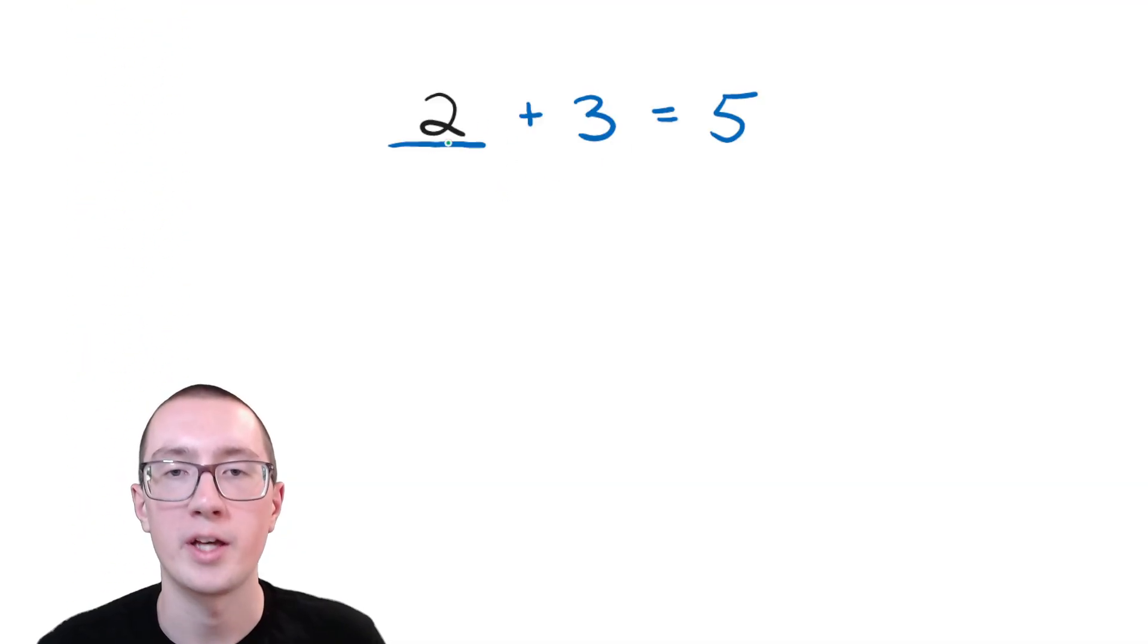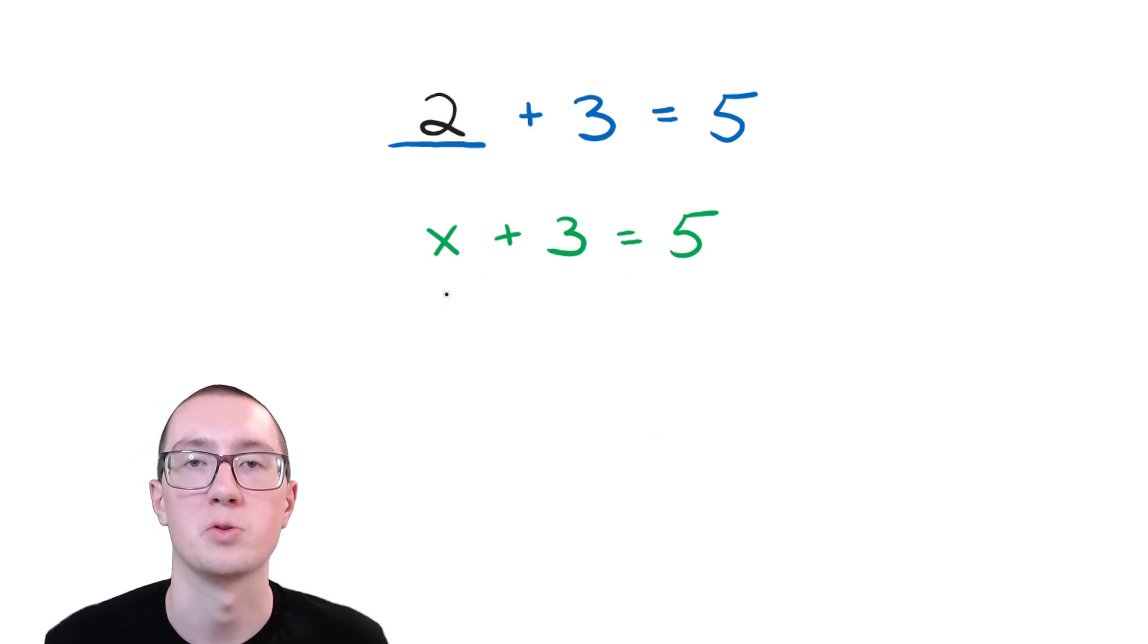So in algebra, we don't use blanks, we use letters, and letters are called variables. But it's literally the same thing as a blank. If you had to solve for x for x plus three equals five, it's literally the same thing as blank plus three equals five.